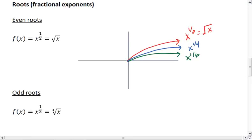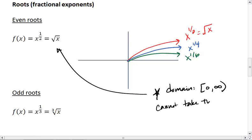A thing to notice about this graph is that the domain is only from 0 to infinity. The reason for that is our radicand - we cannot take the even root of a negative number, at least not if we want a real number as our solution.